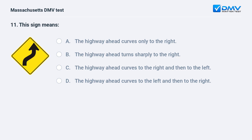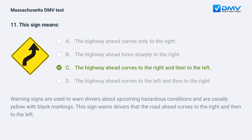This sign means: a. the highway ahead curves only to the right. b. the highway ahead turns sharply to the right. c. the highway ahead curves to the right and then to the left. d. the highway ahead curves to the left and then to the right. Answer: c. Warning signs are used to warn drivers about upcoming hazardous conditions and are usually yellow with black markings. This sign warns drivers that the road ahead curves to the right and then to the left.